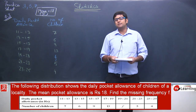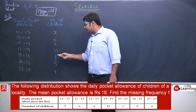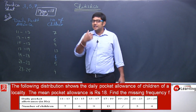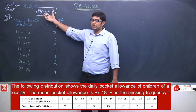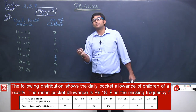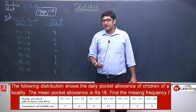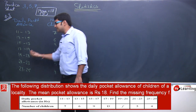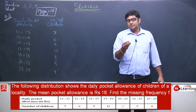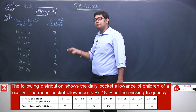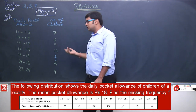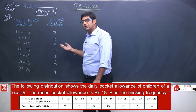We need to find the value of F — that is, how many children receive pocket money in the range 19 to 21 rupees — such that the mean pocket money of all children combined equals 18 rupees. We will apply the method to calculate the mean of this grouped data.